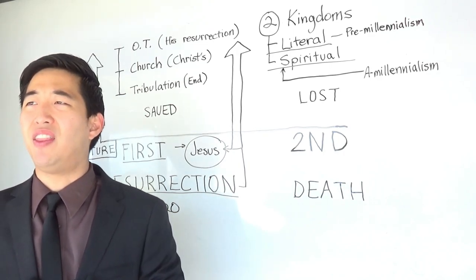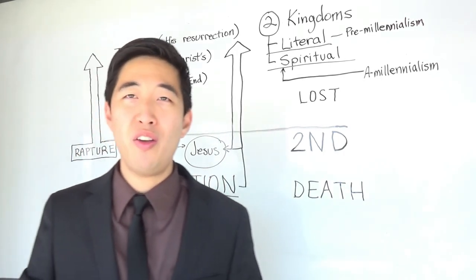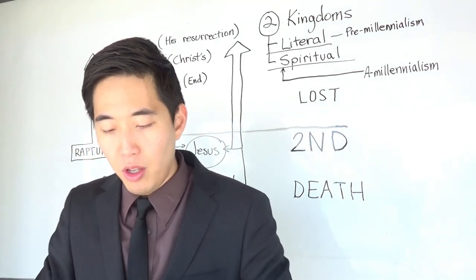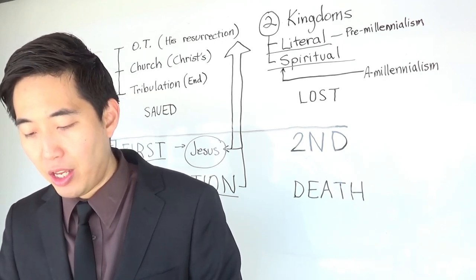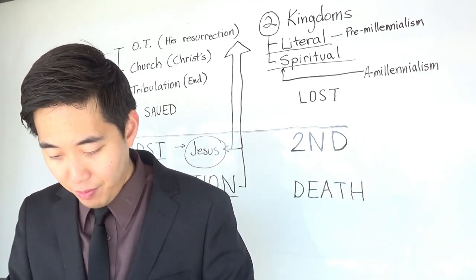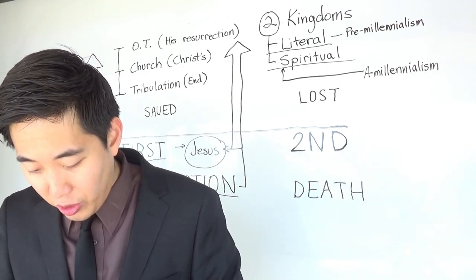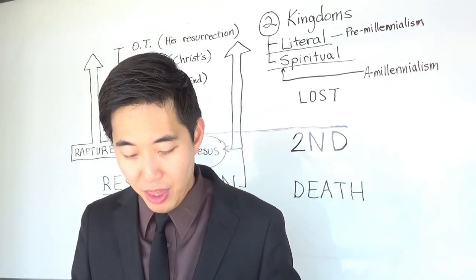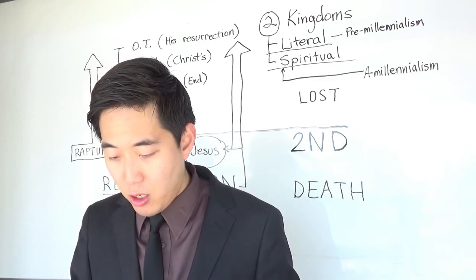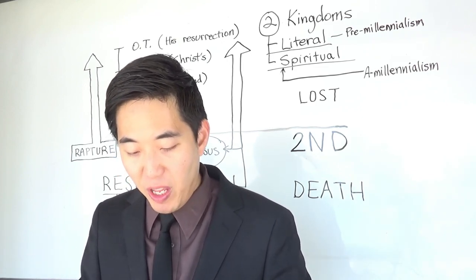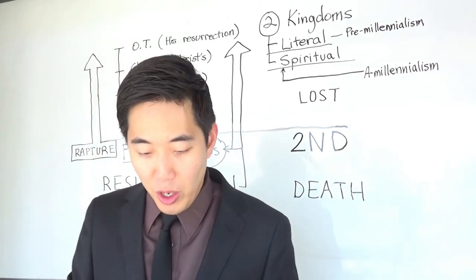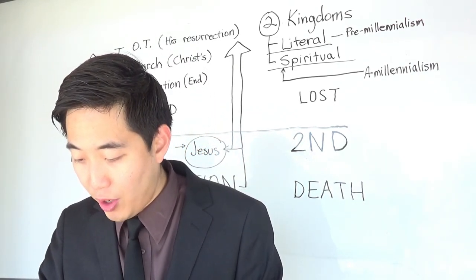Now, even amillennials will have to believe in that. You know why they have to believe in a literal kingdom, too? Because where are they going to go after they die? They have to go to a literal kingdom, which is Jesus Christ up in heaven. Now, let's go to the book of Timothy. Look at the book of 2 Timothy. We're actually going to look at 1 Timothy. 1 Timothy chapter 1. We're going to look at 1 Timothy chapter 1.